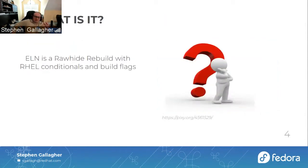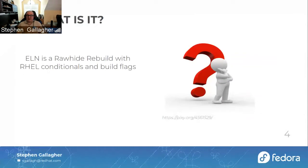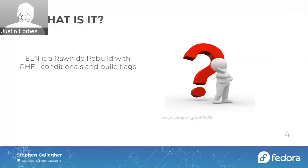So what is ELN itself? It's no longer El Nino — we rebranded it as 'Enterprise Linux Next.' It's an attempt to make an early preview, kind of a pre-alpha, of what the next major version of RHEL — RHEL 10, RHEL 11, RHEL 12 — will look like, and to maintain those changes and keep them up to date, making sure they build in Fedora.